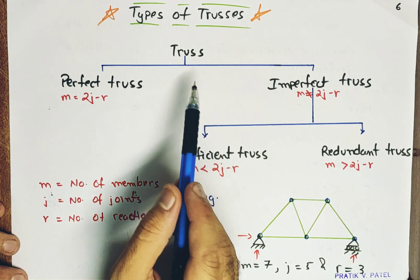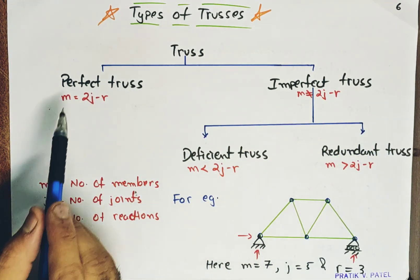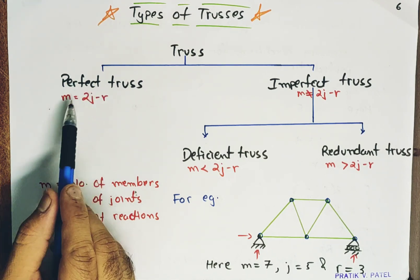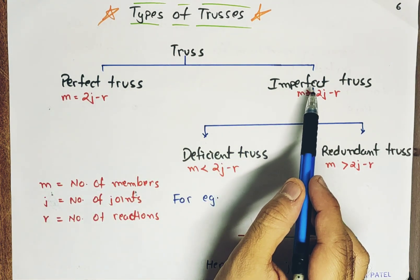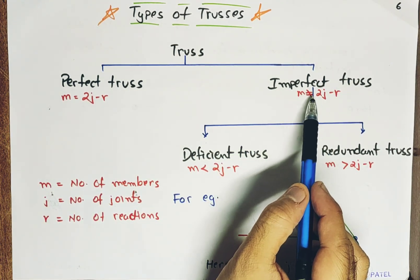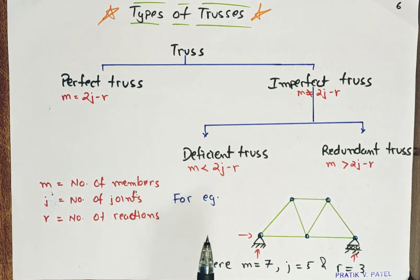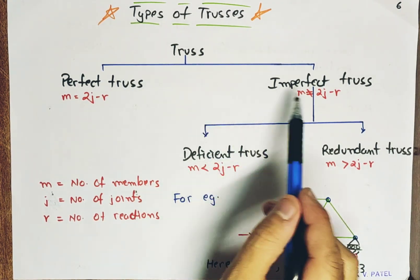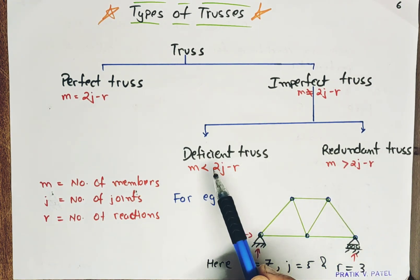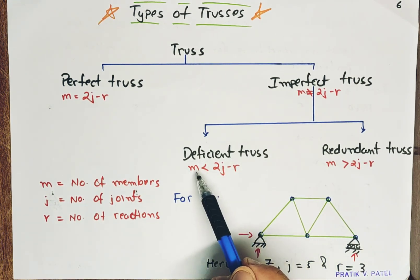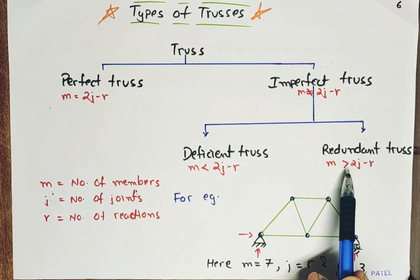Here is the classification of the truss, where the first one is perfect truss and the second one is imperfect truss. The truss which is perfect has the formula m equal to 2j minus r, and the truss which is imperfect has the formula m not equal to 2j minus r. Imperfect truss is further classified into two types: deficient truss and redundant truss. The formula for deficient truss is m less than 2j minus r, and for redundant truss it is m greater than 2j minus r.